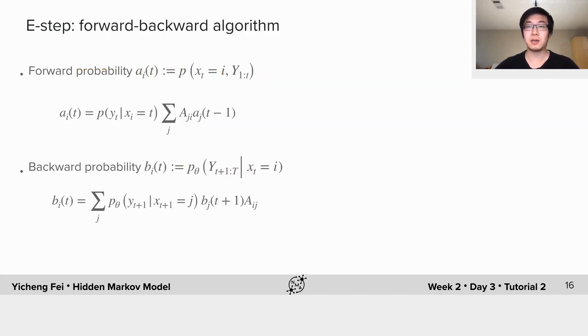In hidden Markov model, the E-step is called the forward-backward algorithm. We define the forward probability α_i(t) as the joint probability of x_t and all current and past data. It can be calculated recursively from the head of the chain to the end using this formula.